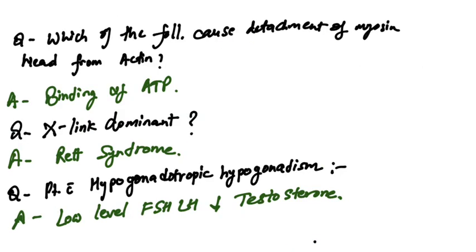What causes detachment of myosin head from actin? Binding of ATP causes detachment of myosin head from actin. X-linked dominant disease: Rett syndrome is an X-linked dominant disease.